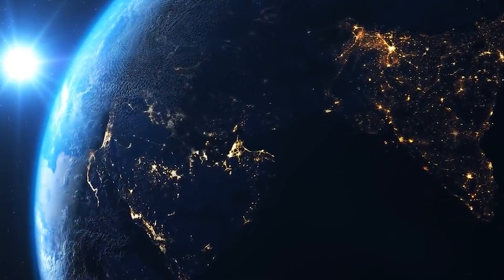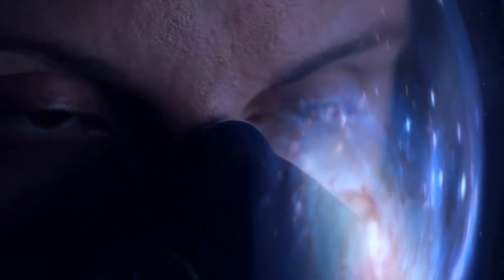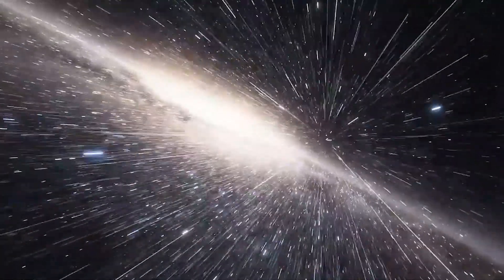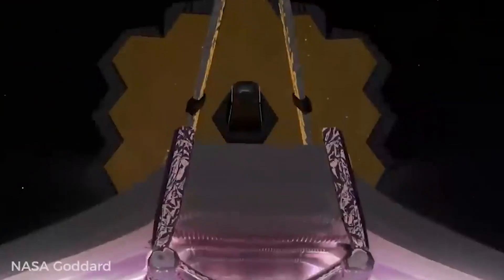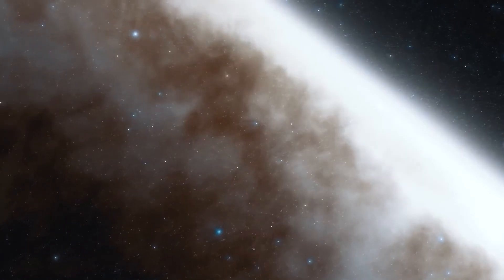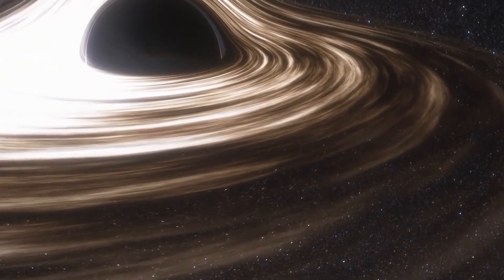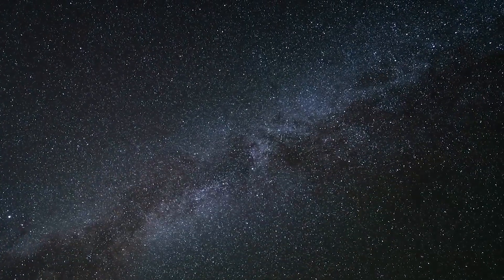James Webb captured a star called HD 84406. James Webb soon became an exoplanet discovery or planet outside our solar system and this star is one of them. James Webb is capable of a great deal and there is no surprise exoplanet discovery is one of these exceptional abilities.